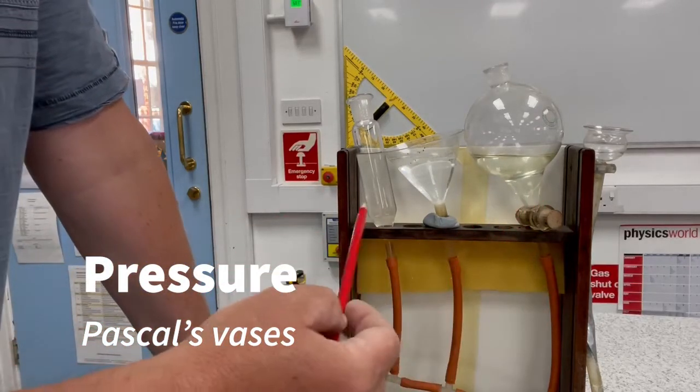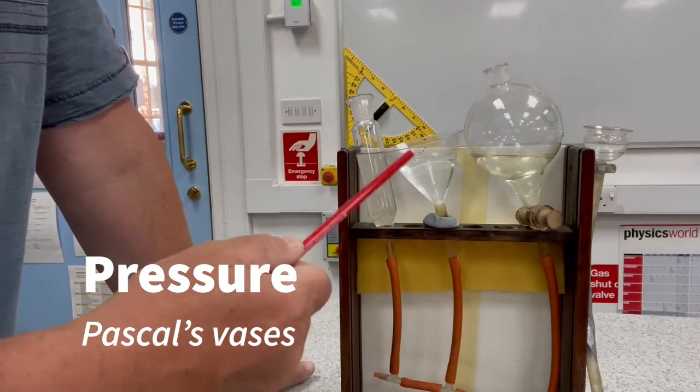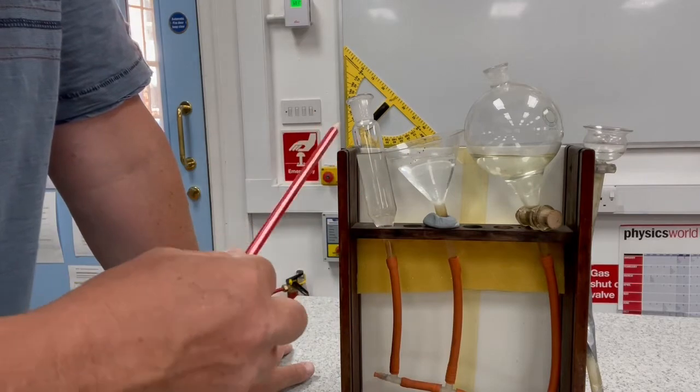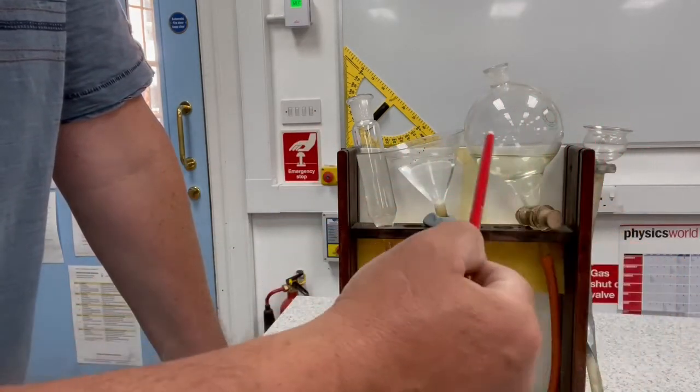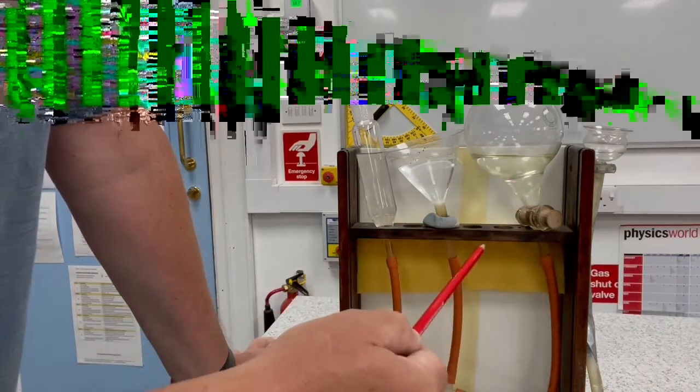These are called Pascal vases and named after the famous French physicist. What they're designed to show is that the area does not affect the pressure on this fluid.